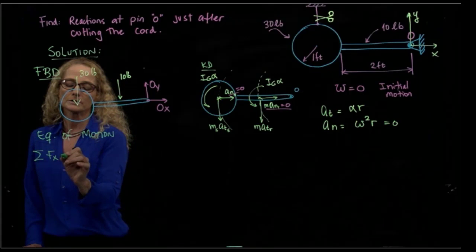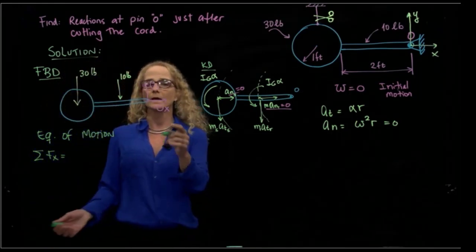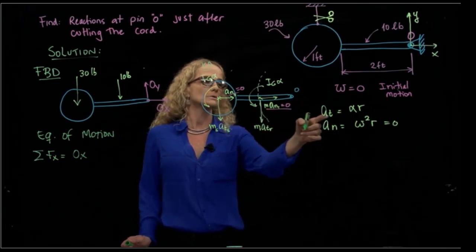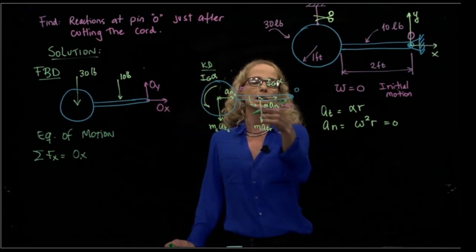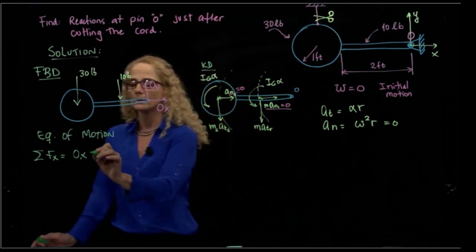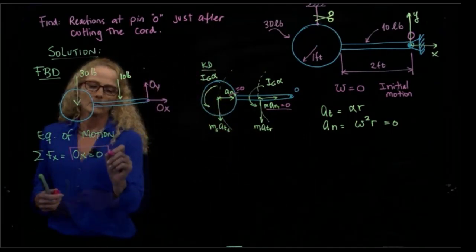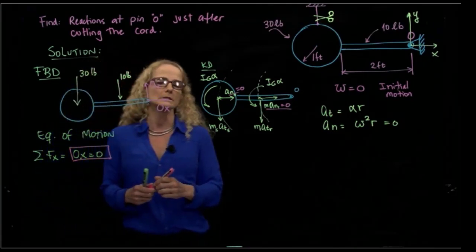Let's add forces first. From our forces in X, we have OX, and we do not have any acceleration in X because the normal accelerations are equal to zero. From here, we already found our first result: the force in X direction is equal to zero.